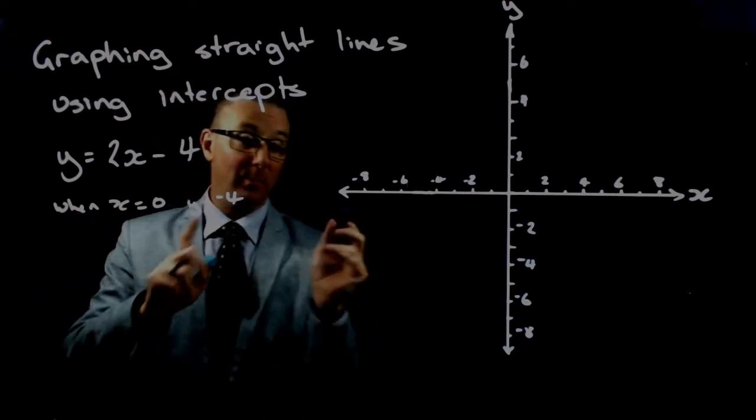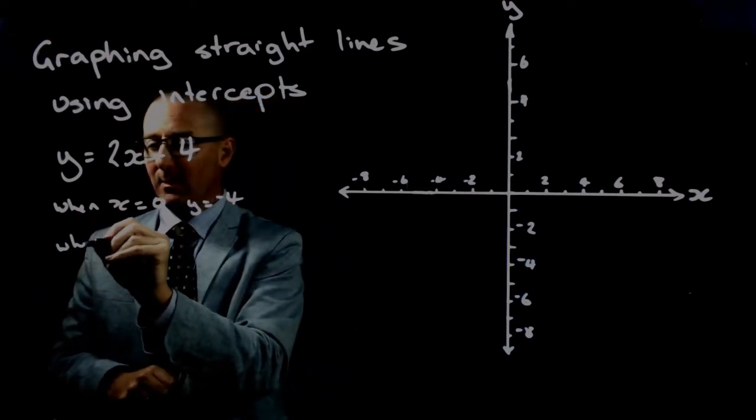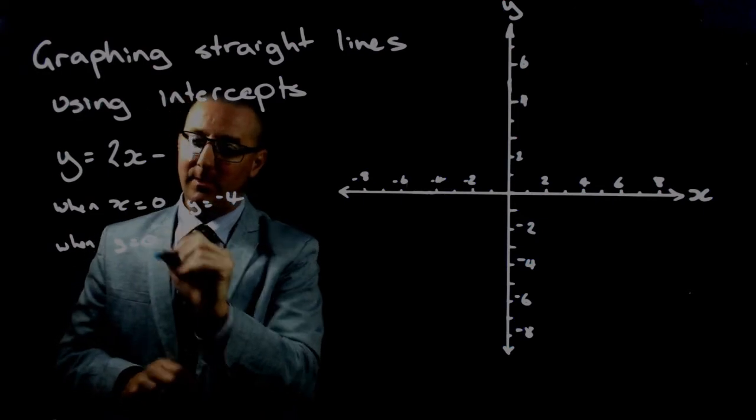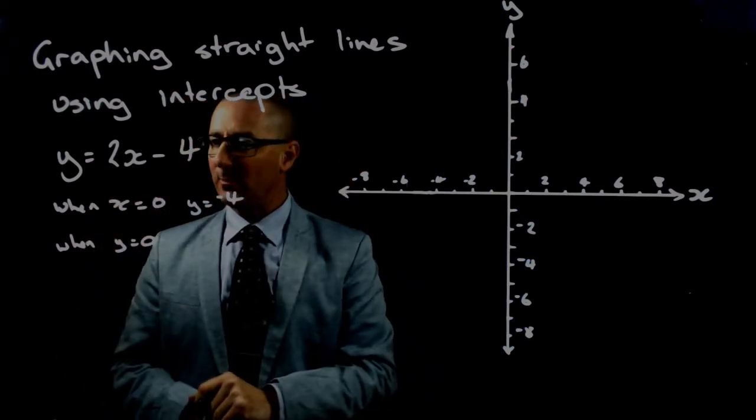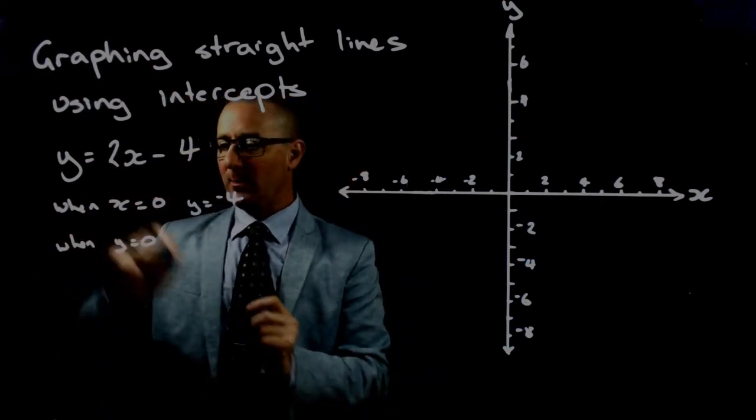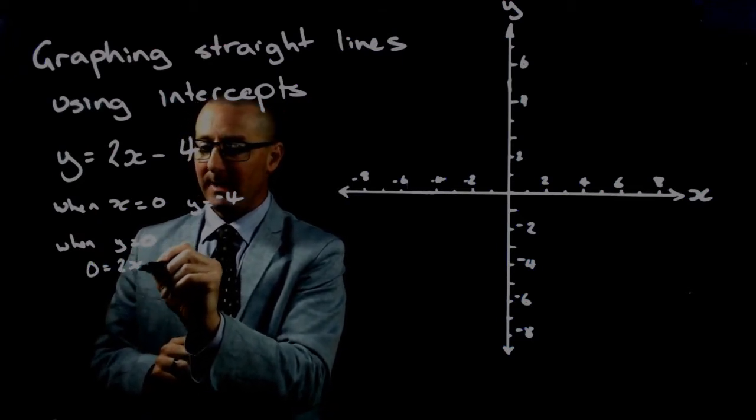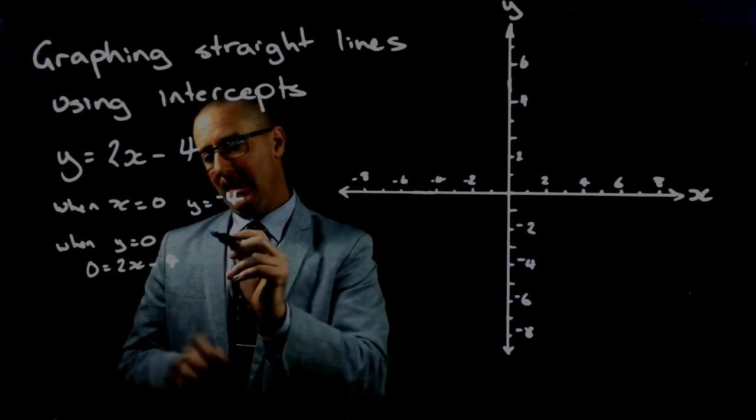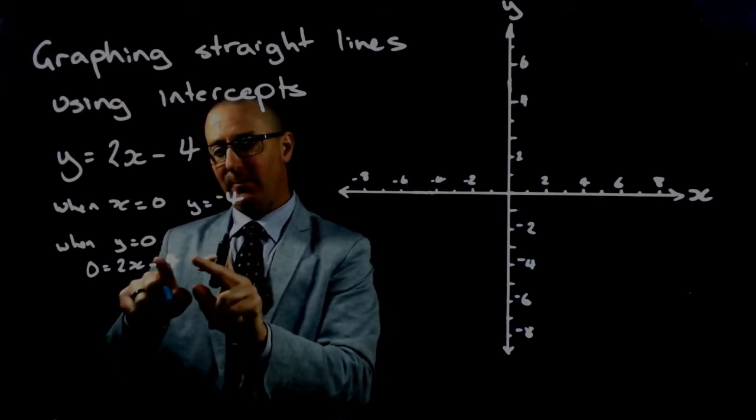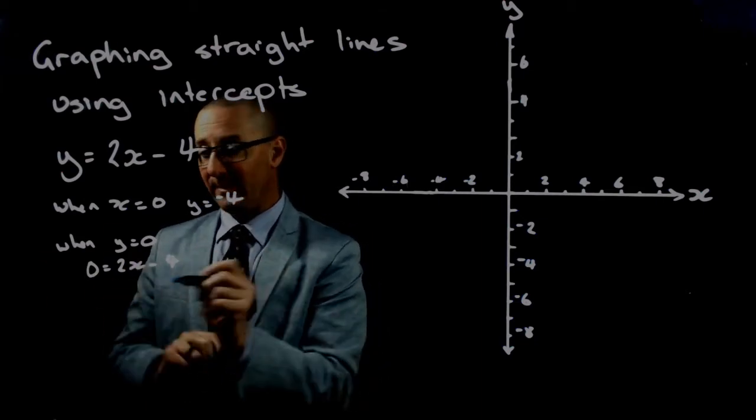Now when y equals 0, we're going to have to do some manipulation with this equation. When y equals 0, 0 equals 2x minus 4, and that means we can add 4 to both sides of the equation to find the value of 2x.